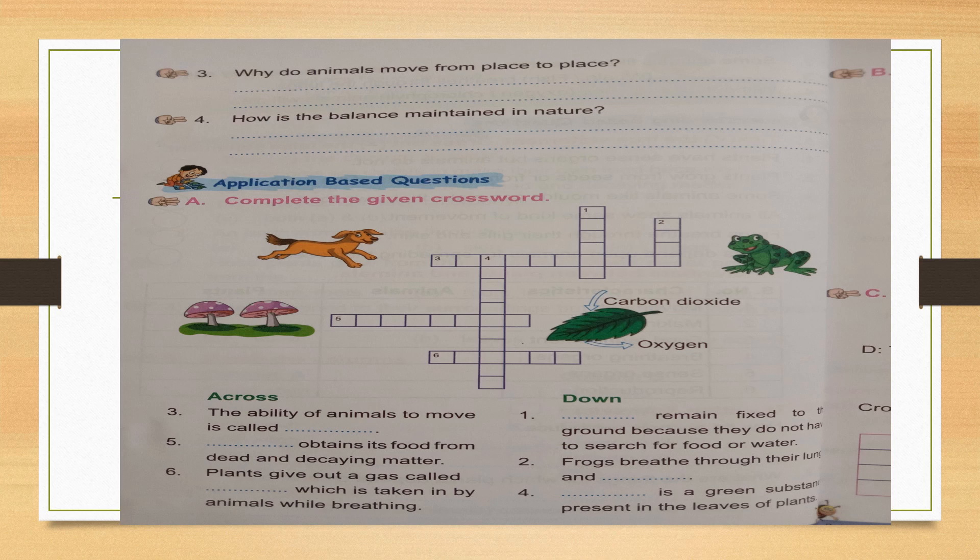Down clues: first one — dash remains fixed to the ground because they do not need to search for food or water. Animals search for food and roam, but this thing doesn't need to move because it can make its own food and get water from the ground. Near the frog box — going down, 6 boxes. Think nicely and write.